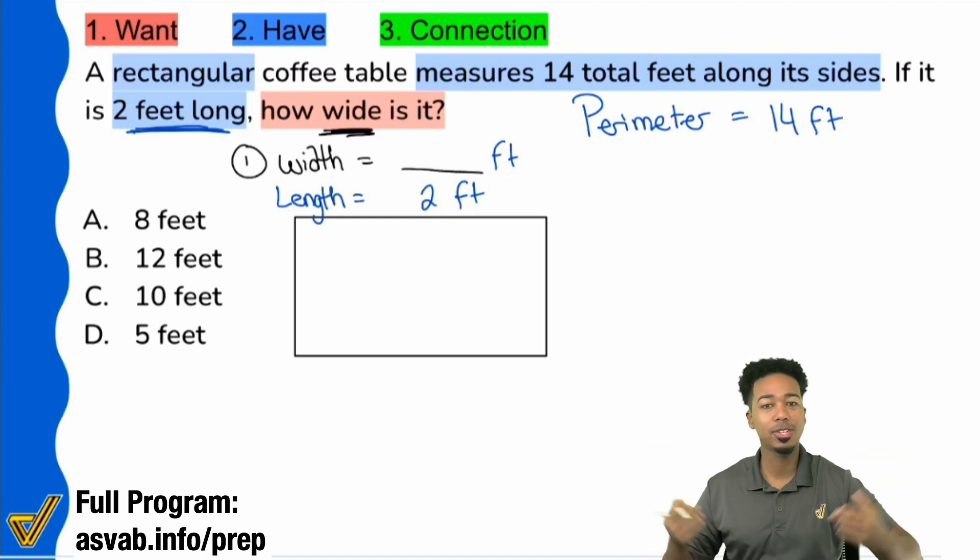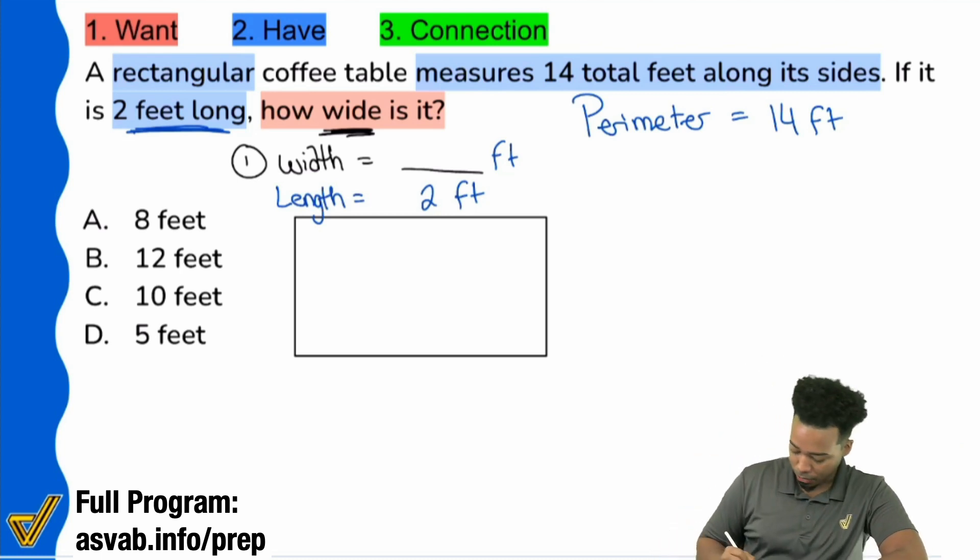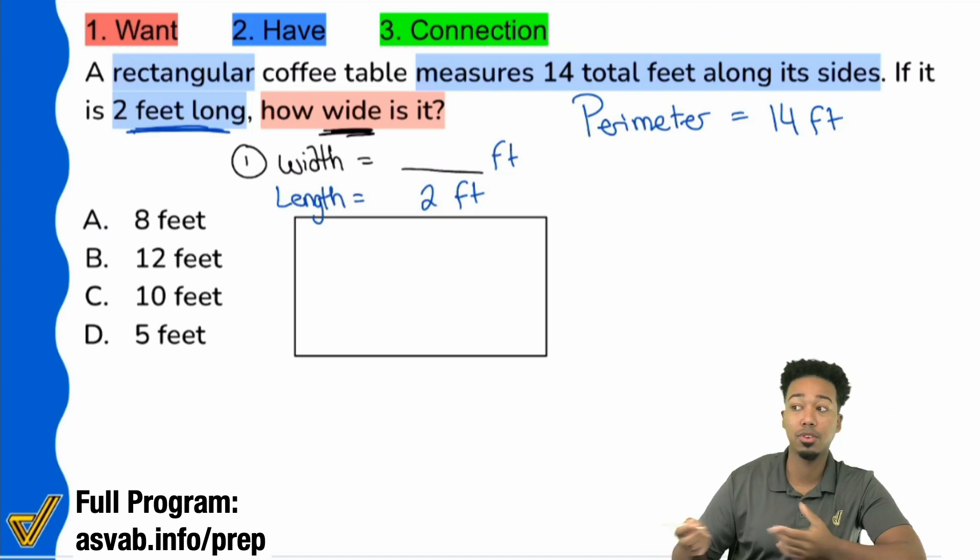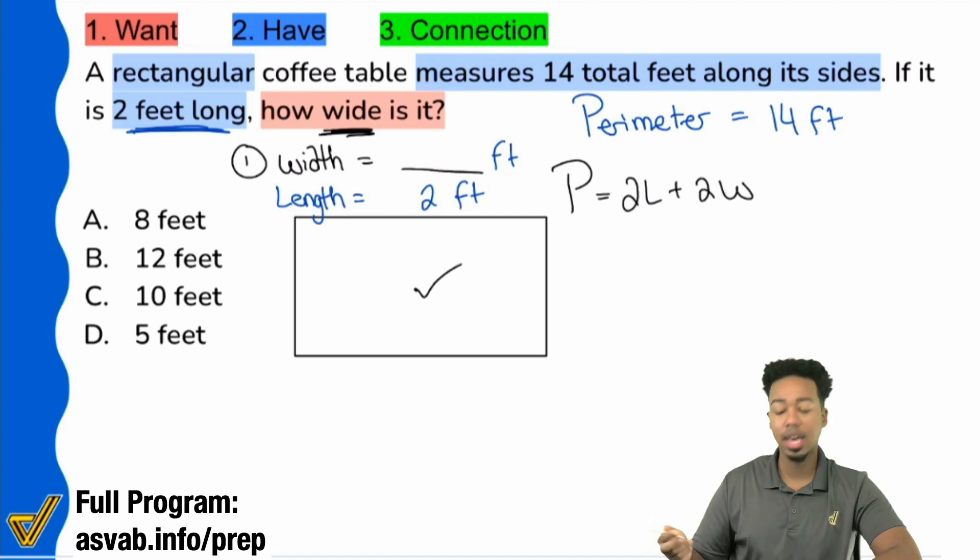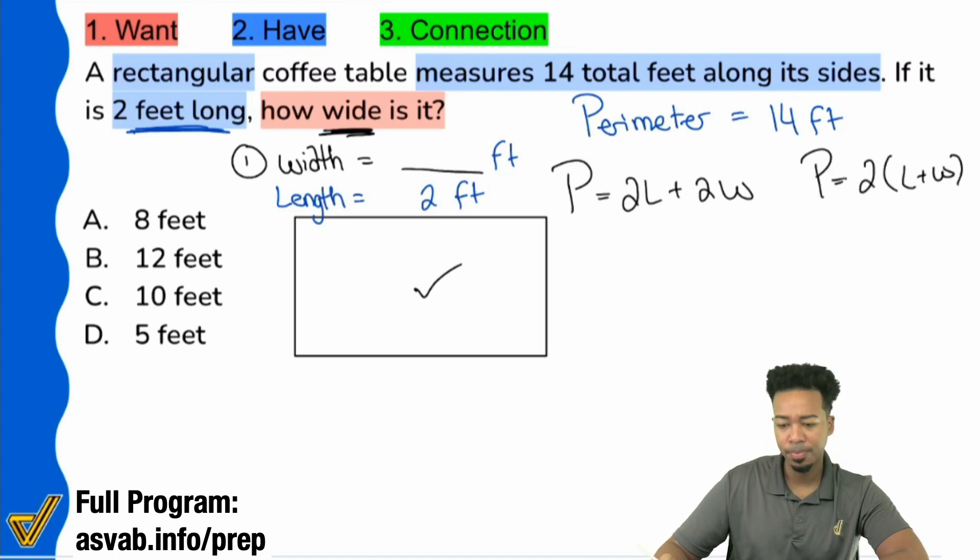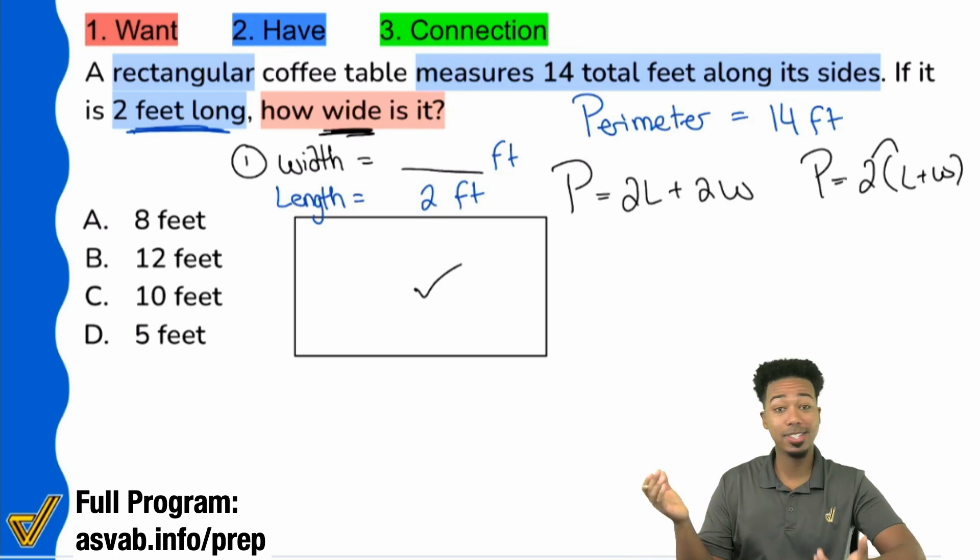This is where your studying and memorization of the formula is going to come into play. The perimeter of a rectangle, there's two different formulas, but they're literally the same exact thing. The perimeter, you can look at it like this: 2L plus 2W. The other formula is perimeter equals two times L plus W. They're both literally the same exact formula because when you distribute the two, it's going to be 2L plus 2W, same deal. I'm going to go ahead and stick to one of the formulas. I'll just use this one here, and I'm going to plug my numbers in.